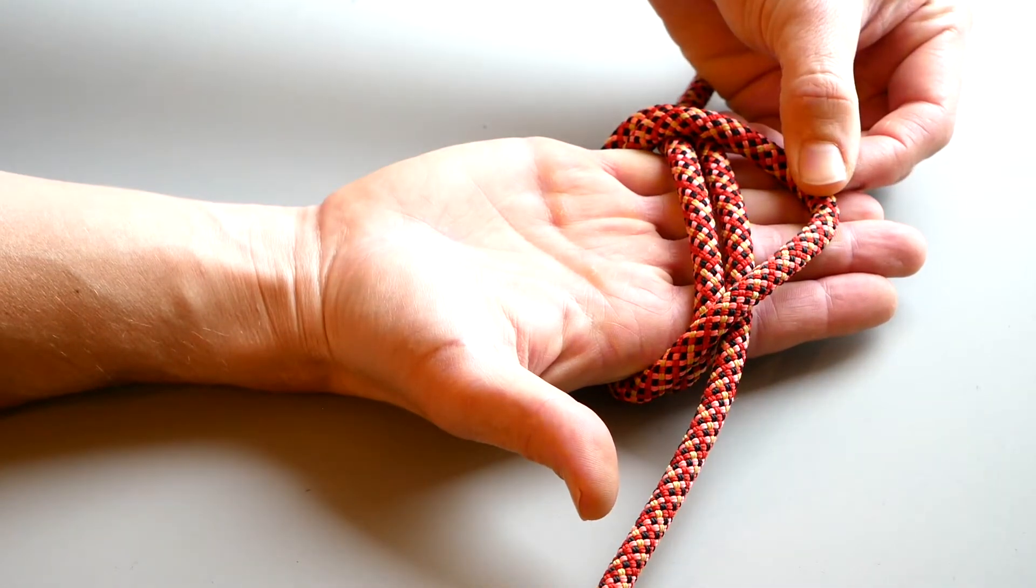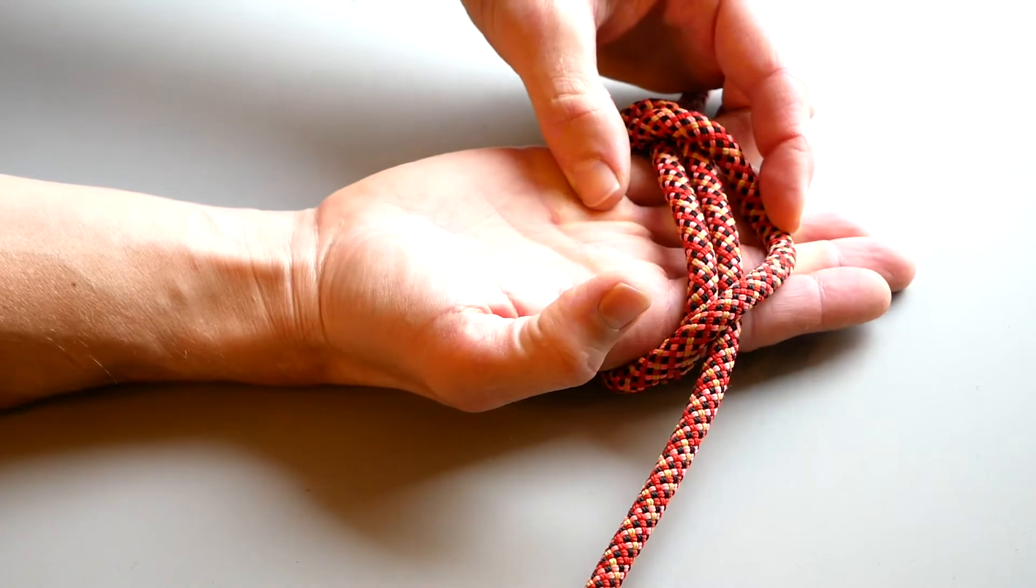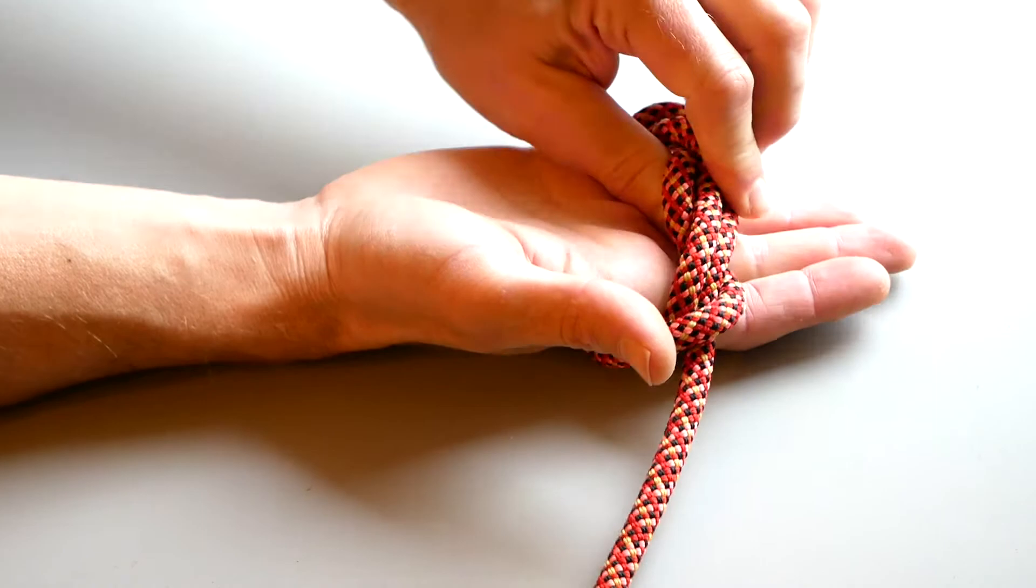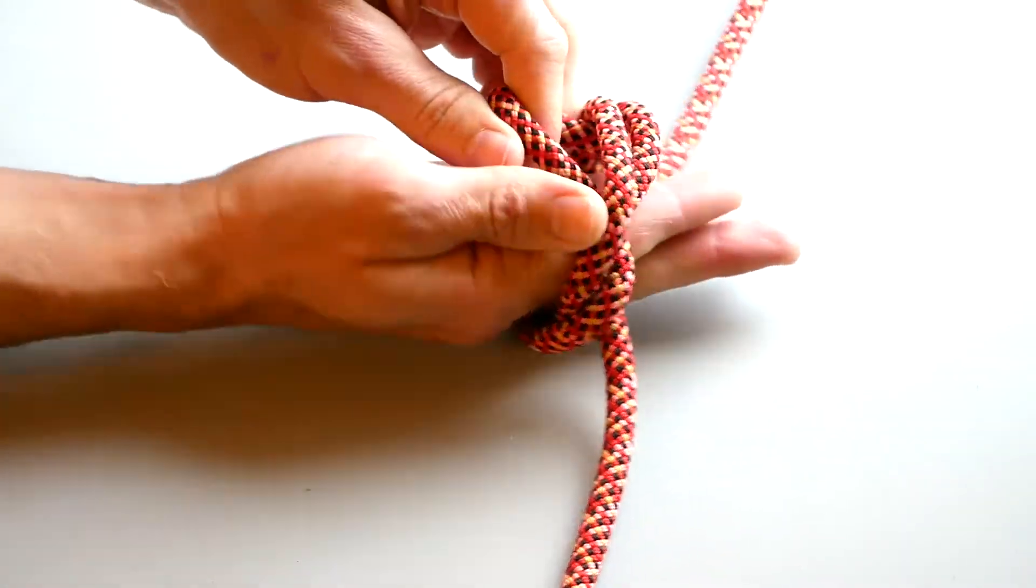While maintaining the lines in this position, pull the line you just moved to the top back under the other lines and hold on to that loop. Continue pulling that line through to form the loop of the butterfly.